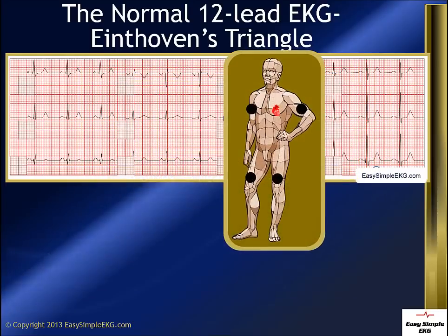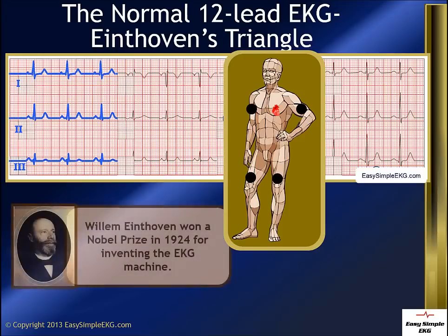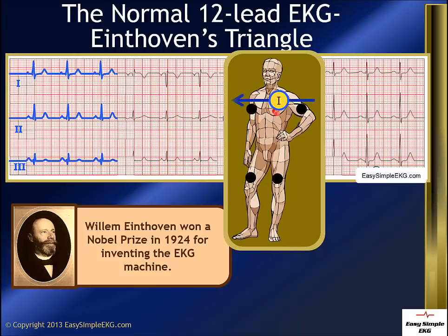The left side of the EKG is created by the limb leads — the leads you placed on the patient's arms and legs. Leads 1, 2, and 3 are vectors. These leads make up a triangle and are actually called Einthoven's triangle after the guy who identified them. Lead 1 looks from the left arm to the right arm, and the heart happens to get in the middle. Lead 2 looks from the left leg to the right arm, and Lead 3 looks from the left leg to the left arm — again the heart gets in the middle. Remember that the right leg lead is ground, so nothing is ever traced from that lead.